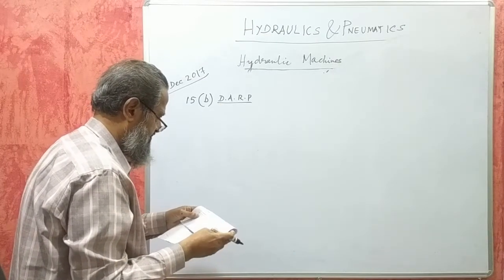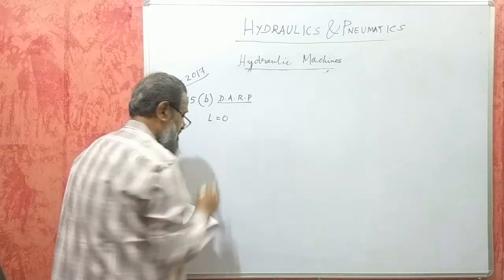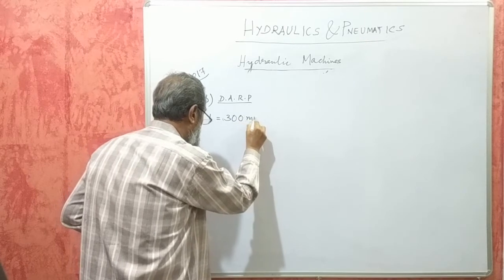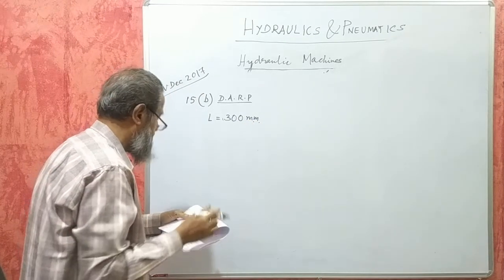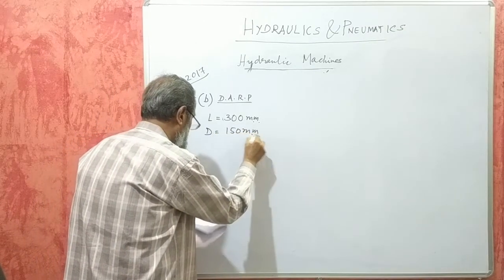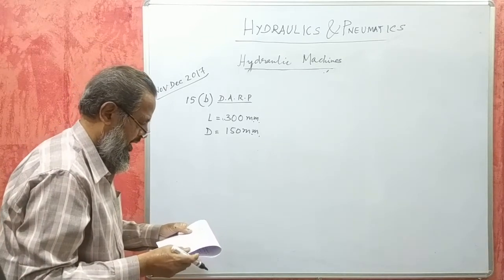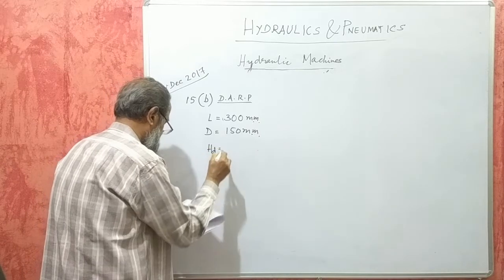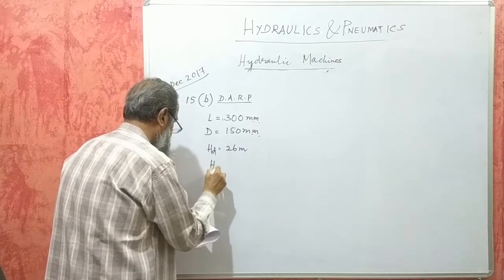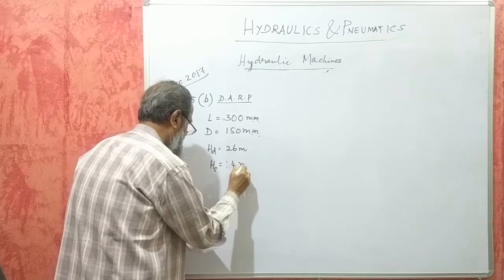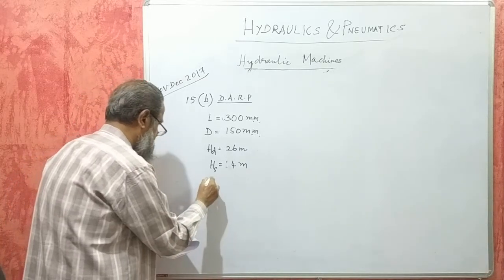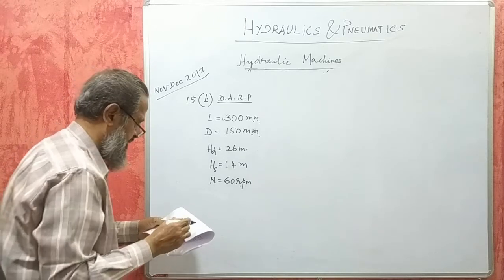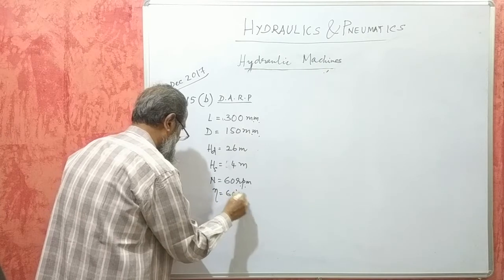...has a stroke length of 300 mm, and piston diameter D is 150 mm. Delivery head is 26 meters and suction head is 4 meters respectively. If the pump runs at 60 RPM, find the power required to drive the pump with an efficiency of 60 percent.